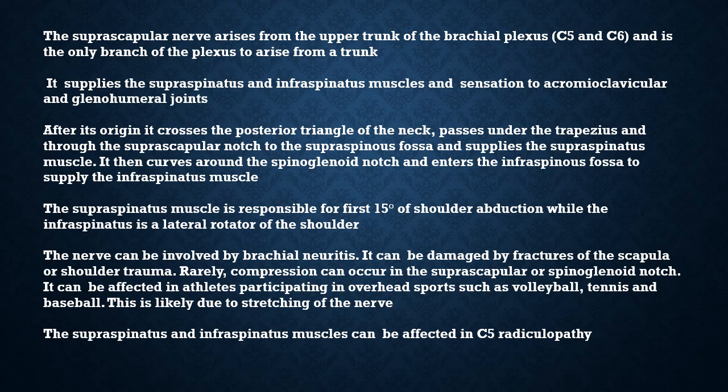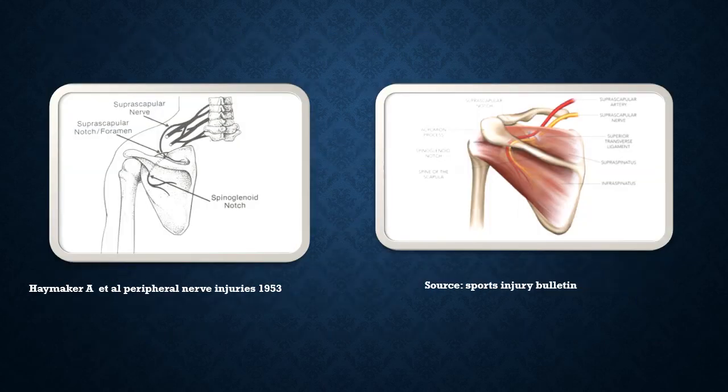The supraspinatus and infraspinatus muscles can also be affected in a C5 radiculopathy. The first image shows the suprascapular nerve arising from the upper trunk, passing through the suprascapular notch and the spinoglenoid notch, while the second image shows the location of the supraspinatus and infraspinatus muscles.